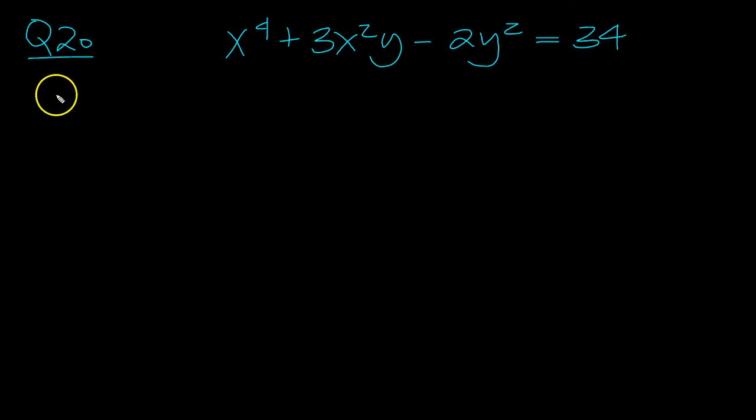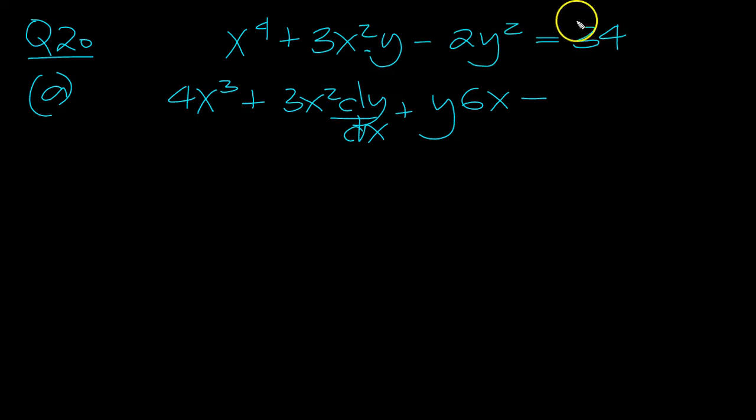So let's differentiate then to get dy/dx, implicitly 4x cubed. This is a product, u dv/dx plus v du/dx minus, differentiate this 4y to the 1 multiplied by the something differentiated.